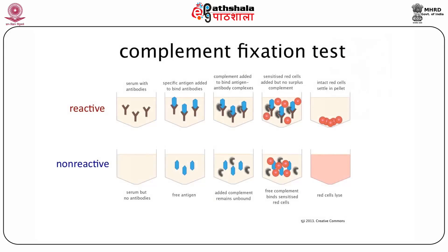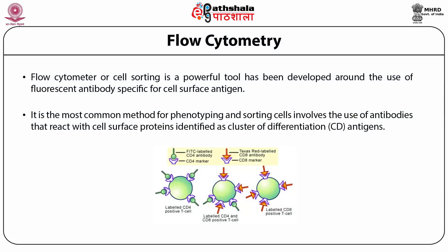Another notable immunoassay is the complement fixation assay. If the biological fluid contains an antibody specific for an antigen, that antigen-antibody complex can be lysed by adding complement derived from rabbit. Depending upon the lysis pattern — either as a pattern or pellet — this tells you whether the patient has an antibody specific for that antigen, which can be determined using the complement immunoassay.